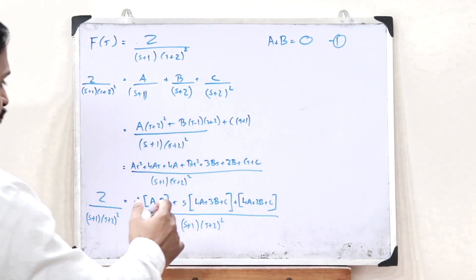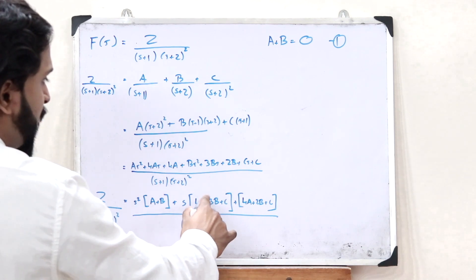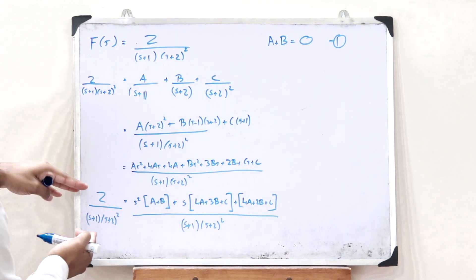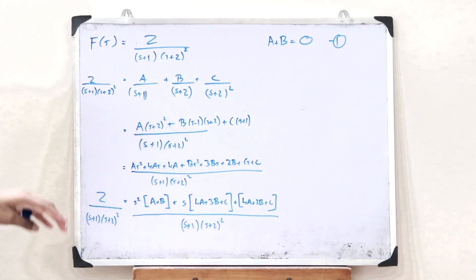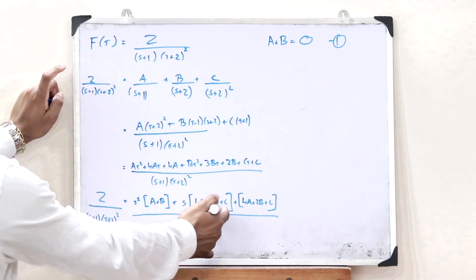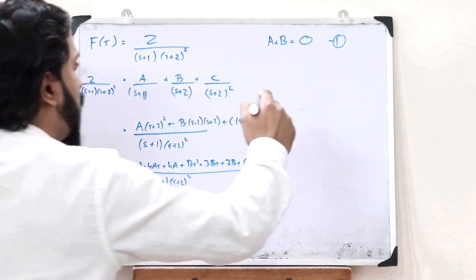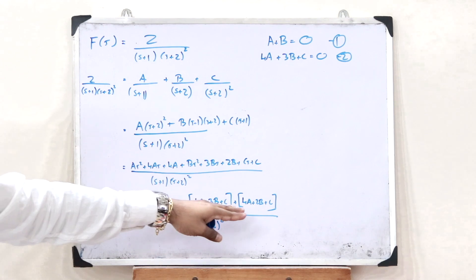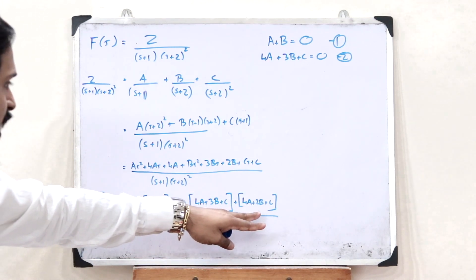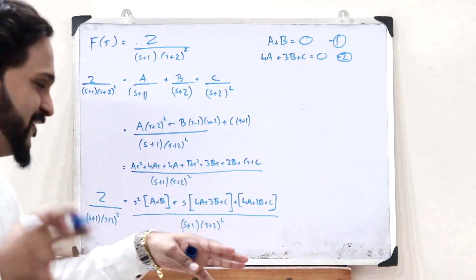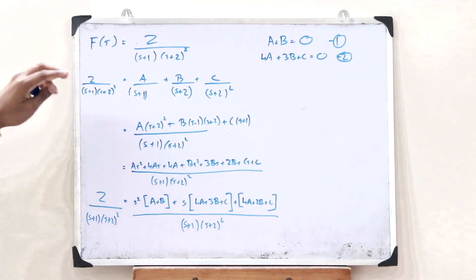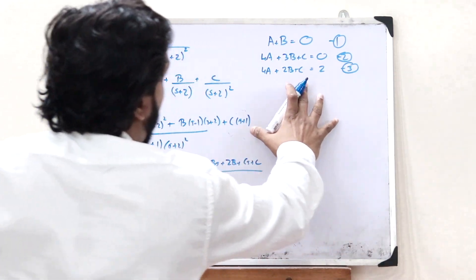Equating the coefficients of s: the coefficient is 4A + 3B + C on the left, but the coefficient of s on the right is zero, so 4A + 3B + C = 0. Finally, equating the constants gives 4A + 2B + C = 2.